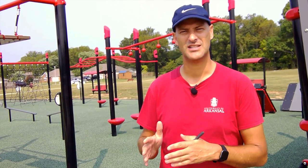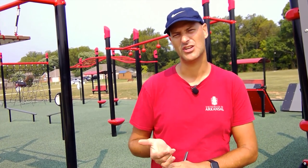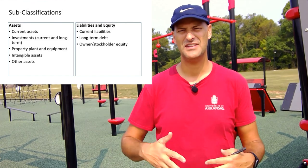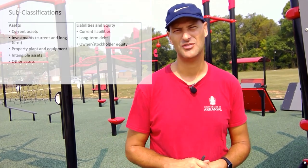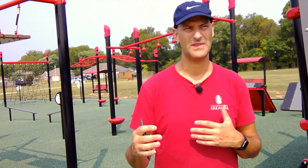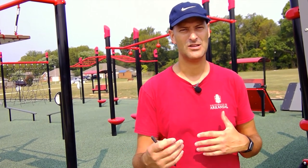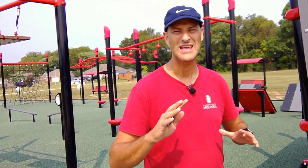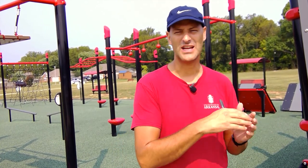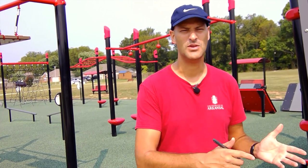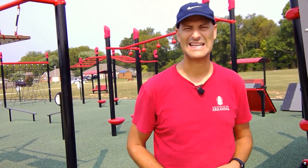Within the liabilities and equity section, liabilities are broken out into current and long-term. Then stockholders' equity lists all the equity accounts. If there's preferred stock — which is somewhat like a debt instrument, and there's been a lot of debate about that — it's usually listed first. Accumulated other comprehensive income is generally listed last.